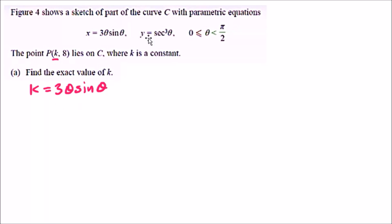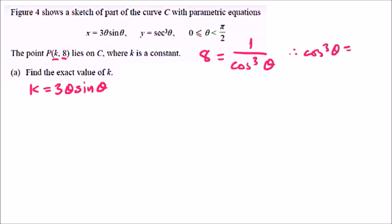The second part: we have y equals sec³θ. We can replace y with the value 8, giving 8 equals 1 over cos³θ, since sec is the reciprocal of cos. Rearranging to make cos³θ the subject, we get cos³θ equals 1/8. Now to isolate cosθ, we cube root both sides and get cosθ equals 1/2.